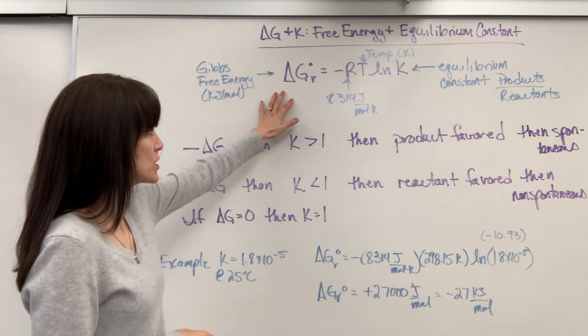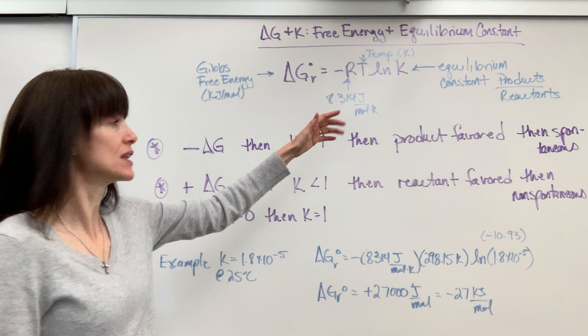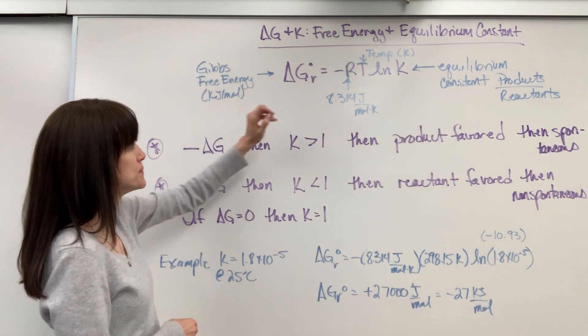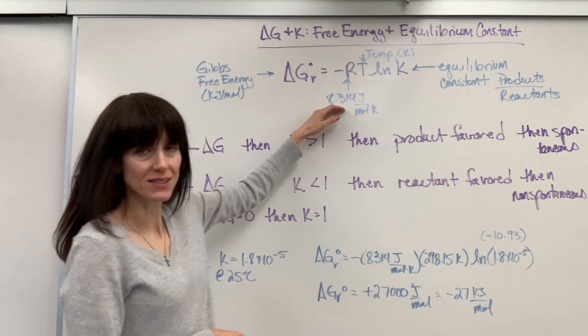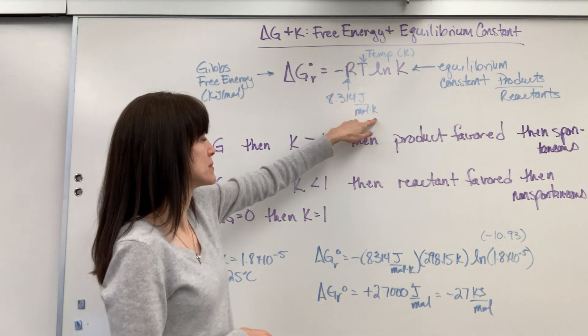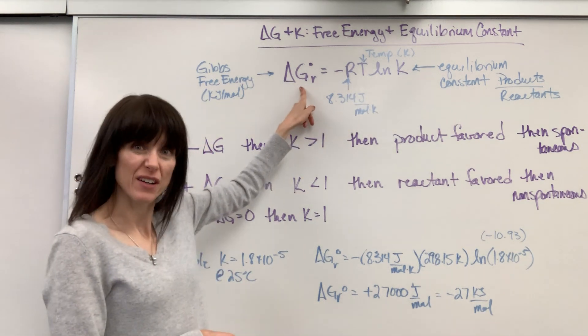So here's an equation that relates Gibbs free energy and the equilibrium constant. So here's your free energy that's in kilojoules per mole. R is going to be the gas constant, but we have to use 8.314 joules divided by mole times Kelvin, joules, because we're dealing with energy, delta G.